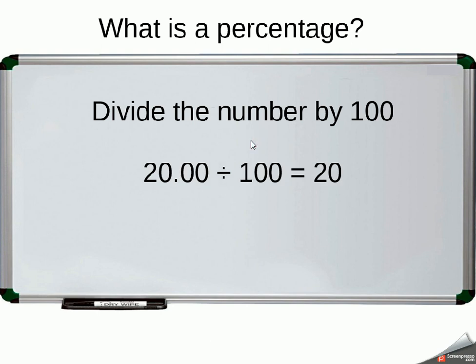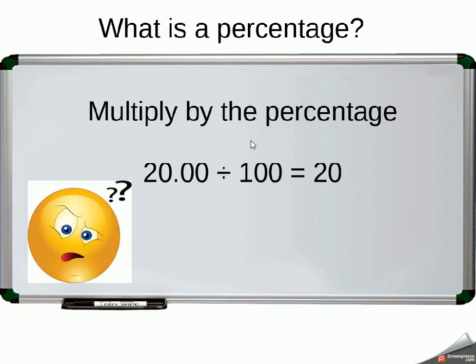Okay, so what do we do with the 20? Well, the next thing I'm going to do is multiply the number by the percentage. So 20 times 50. If I do that calculation, I'll get the answer of a thousand, and that's my answer.